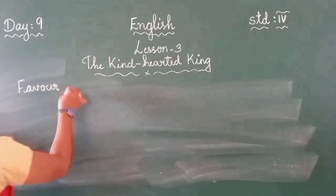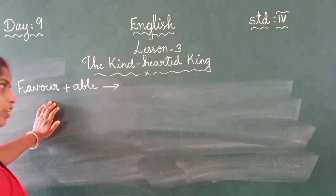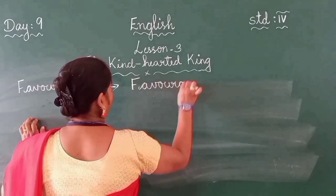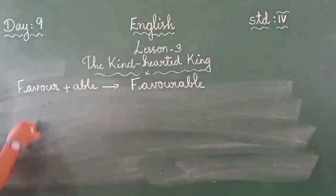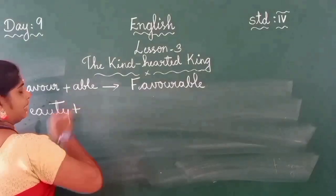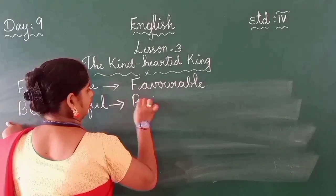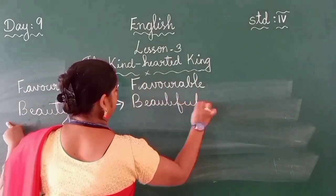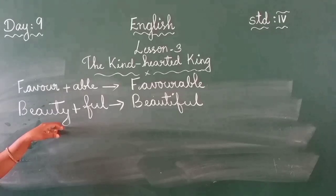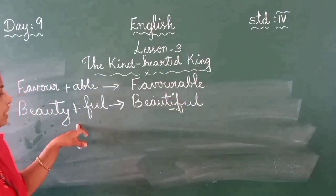When we add the suffix -able to the word favour, we get a new word: favourable. Next, beauty plus the suffix -ful — we will get the word beautiful. Remember, words ending with the letter -y will have the -y changed to -i when we add a suffix.